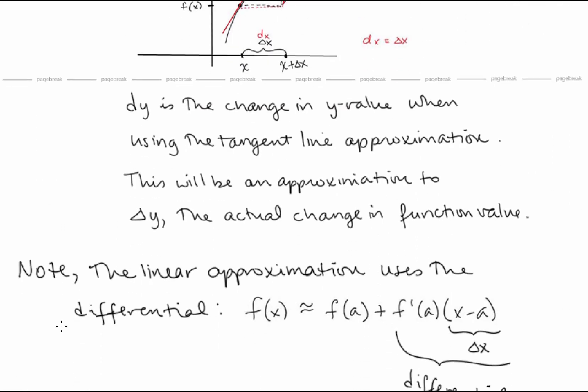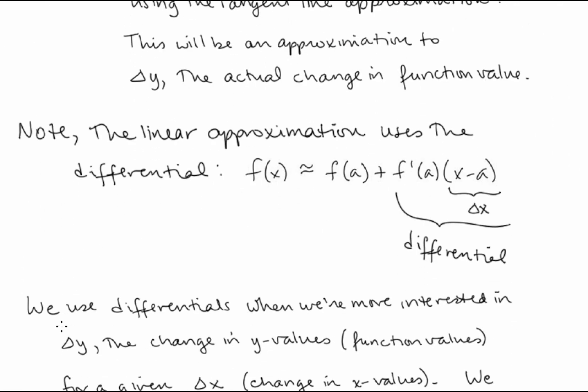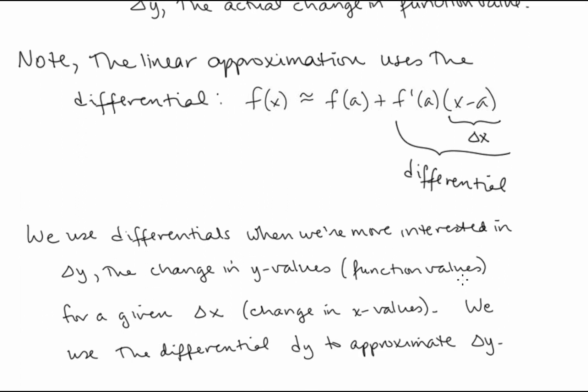Notice the linear approximations we did above use the differential — the term f prime of a times x minus a, where x minus a is delta x, is the differential. We use differentials when we're more interested in delta y, the change in function values, for a given delta x, or change in x values. We use the differential dy to approximate delta y.